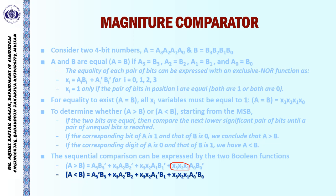Similarly, A < B means B > A. This is ensured by: B3A3' as the first possibility, or if the MSBs are equal then B2A2' with X3 = 1, and so on. The algorithm for A < B is the symmetric opposite of the A > B algorithm.